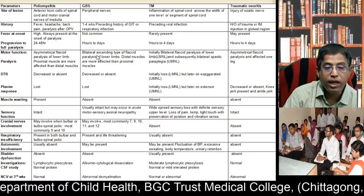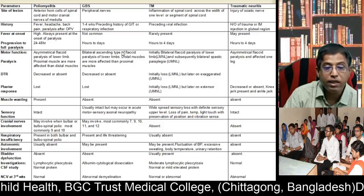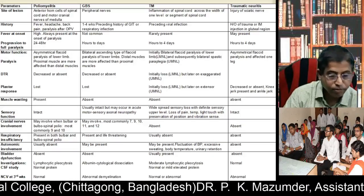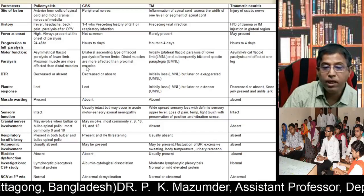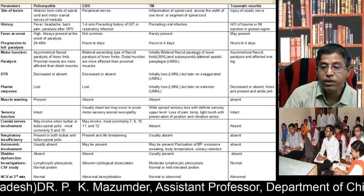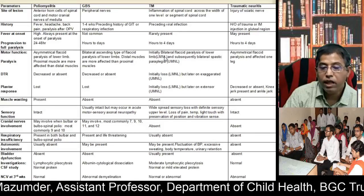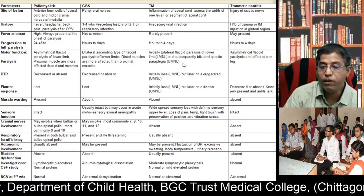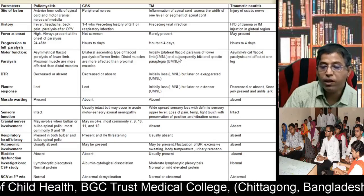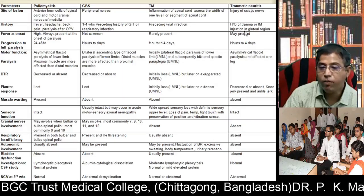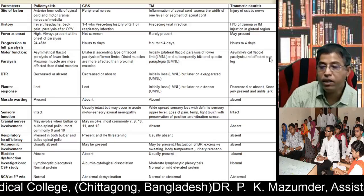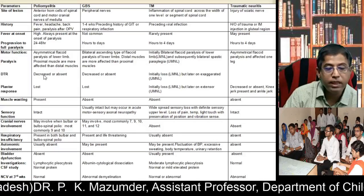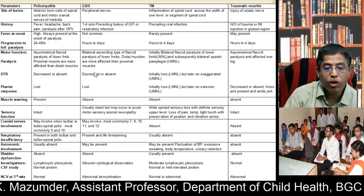In transverse myelitis, initially there is bilateral flaccid paralysis of the lower limb due to spinal shock; subsequently the patient develops bilateral spastic paraplegia. In traumatic neuritis there is asymmetrical flaccid paralysis affecting one leg. Regarding tendon reflexes: in poliomyelitis they are decreased or absent; the same occurs in GBS. In transverse myelitis, initially decreased or absent due to lower motor neuron type lesion, but later accelerated due to upper motor neuron type lesion. In traumatic neuritis, deep tendon reflexes may be decreased or absent — knees may be present but ankles are absent.